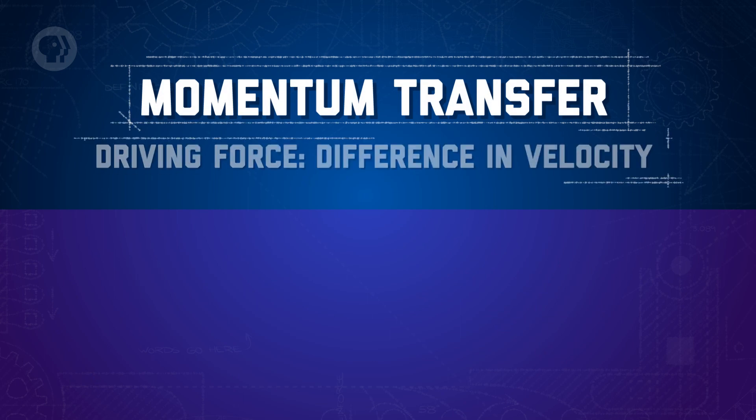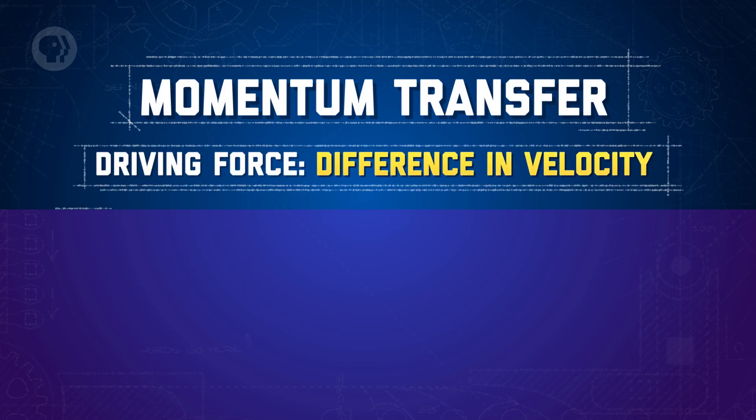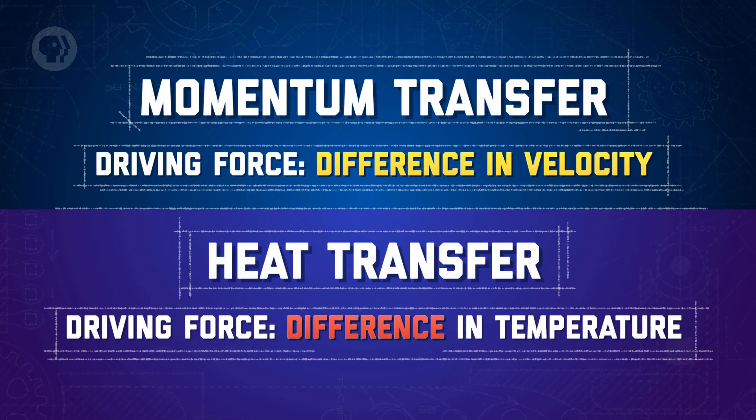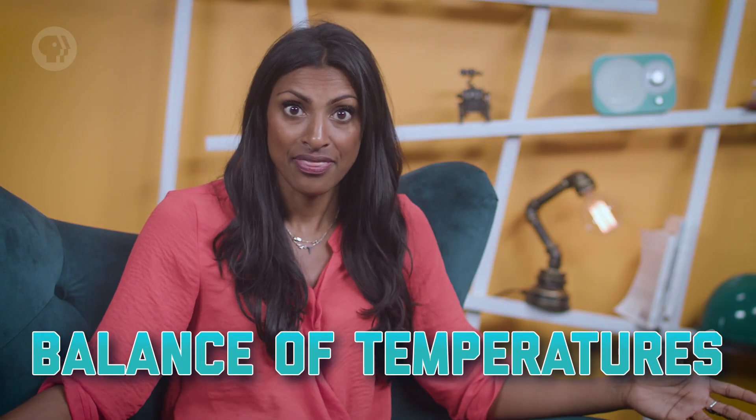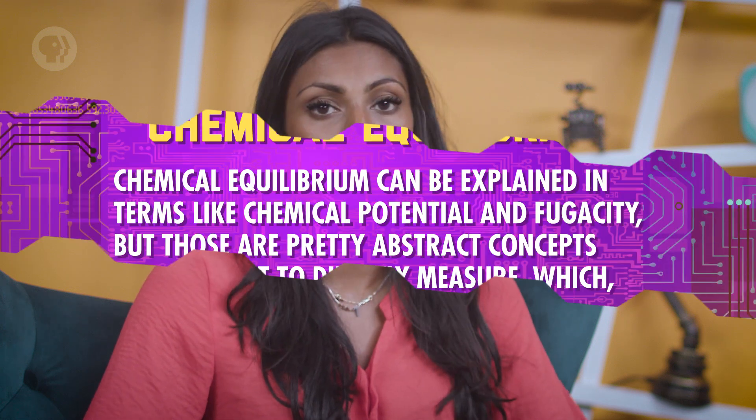So how does that mass get transferred? Well, it needs a driving force. We learned that for momentum transfer, the driving force was a difference in velocity. For heat transfer, it was a difference in temperature. For mass transfer, the driving force is a little more complex. Let's think back to thermodynamics. We said that everything was always trying to reach thermal equilibrium, or a balance of temperatures. That's why temperature differences drive heat transfer. For mass transfer, we're still trying to reach an equilibrium, but this time it's a chemical equilibrium.